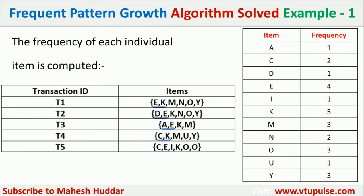Now we need to calculate the frequency of each item. There are different items present like A, C, D, E, and so on. For every item we identify the frequency. For example, item A is bought only once, so we write 1. Item C is bought two times, so we write 2. Similarly, M is bought three times, so we write 3.